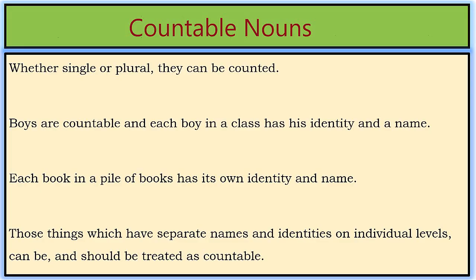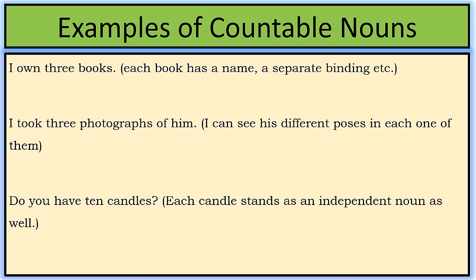First of all, we will talk about countable nouns. Whether single or plural, they can be counted. Boys are countable and each boy in a class has his own identity and a name. Each book in a pile of books has its own identity or a binding. Those things which have separate names and identities on individual levels can be and should be treated as countable nouns.